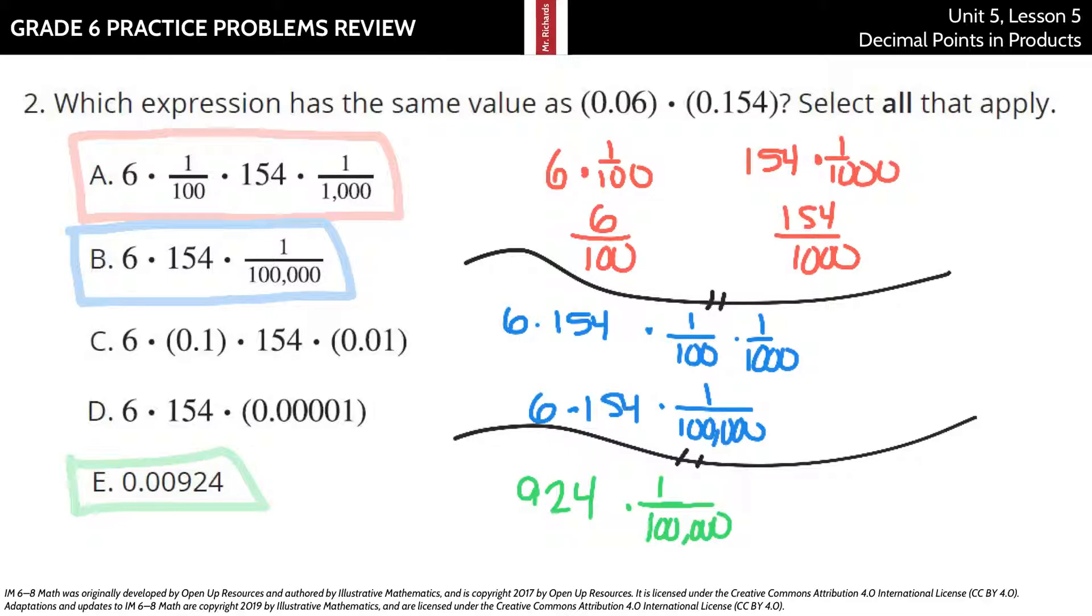So then if we look at E, E does work. You've got this being six times one fifty-four is nine twenty-four, and our hundred-thousandth. And so this is essentially now nine hundred twenty-four hundred-thousandths.